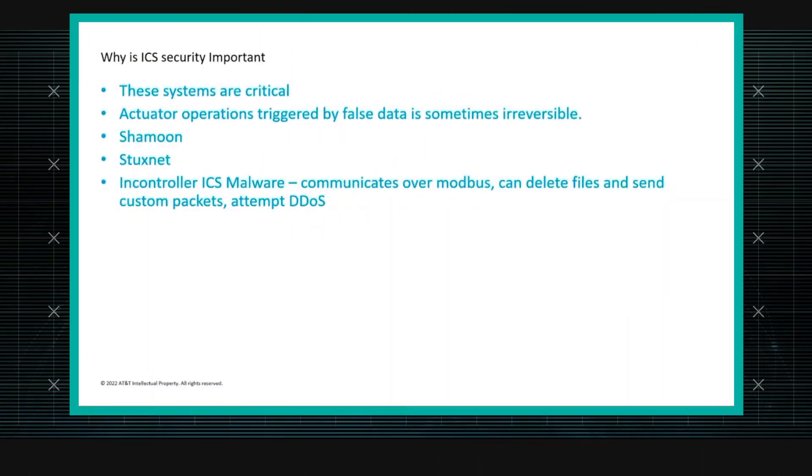ICS is important because many of these systems are critical infrastructure. An adversary or nation-state could take down a power plant and cause an entire city to lose power. A lot of these devices, once false data triggers a PLC, the damage is irreversible — as seen with Stuxnet, probably the most famous ICS attack, where malware was injected into the system and caused centrifuges to essentially tear themselves apart, taking down Iran's nuclear program.